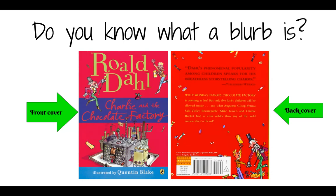Do you remember what a blurb is? You can find a blurb on the back of the book, or sometimes it's on the inside cover. A blurb just tells you a little snapshot of what the book is about. It never spoils the story for you. So it might just tell you about the character and the problem.